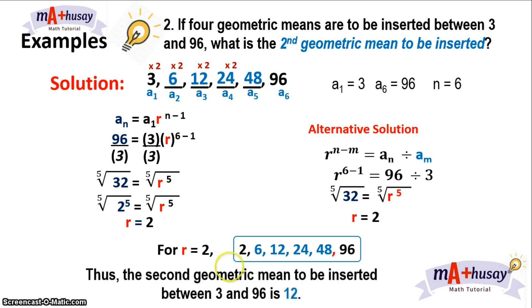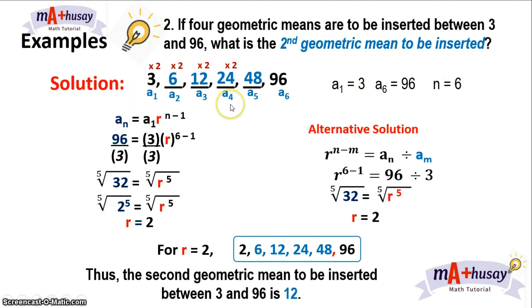The second geometric mean to be inserted between 3 and 96 is 12. Take note: there's a difference between the second geometric mean to be inserted — which is 12 — and the second term of the geometric sequence — which is 6. See the difference?